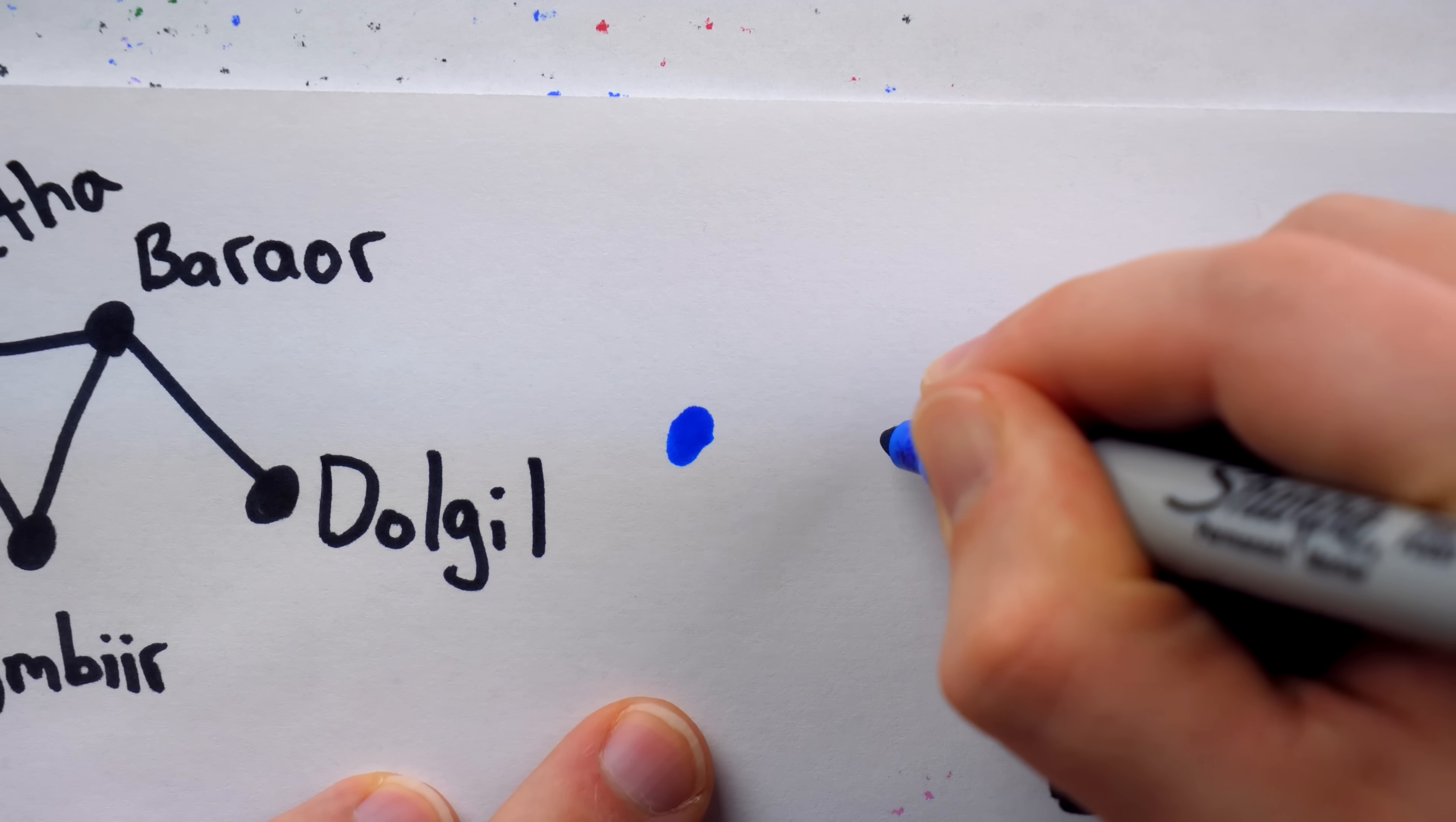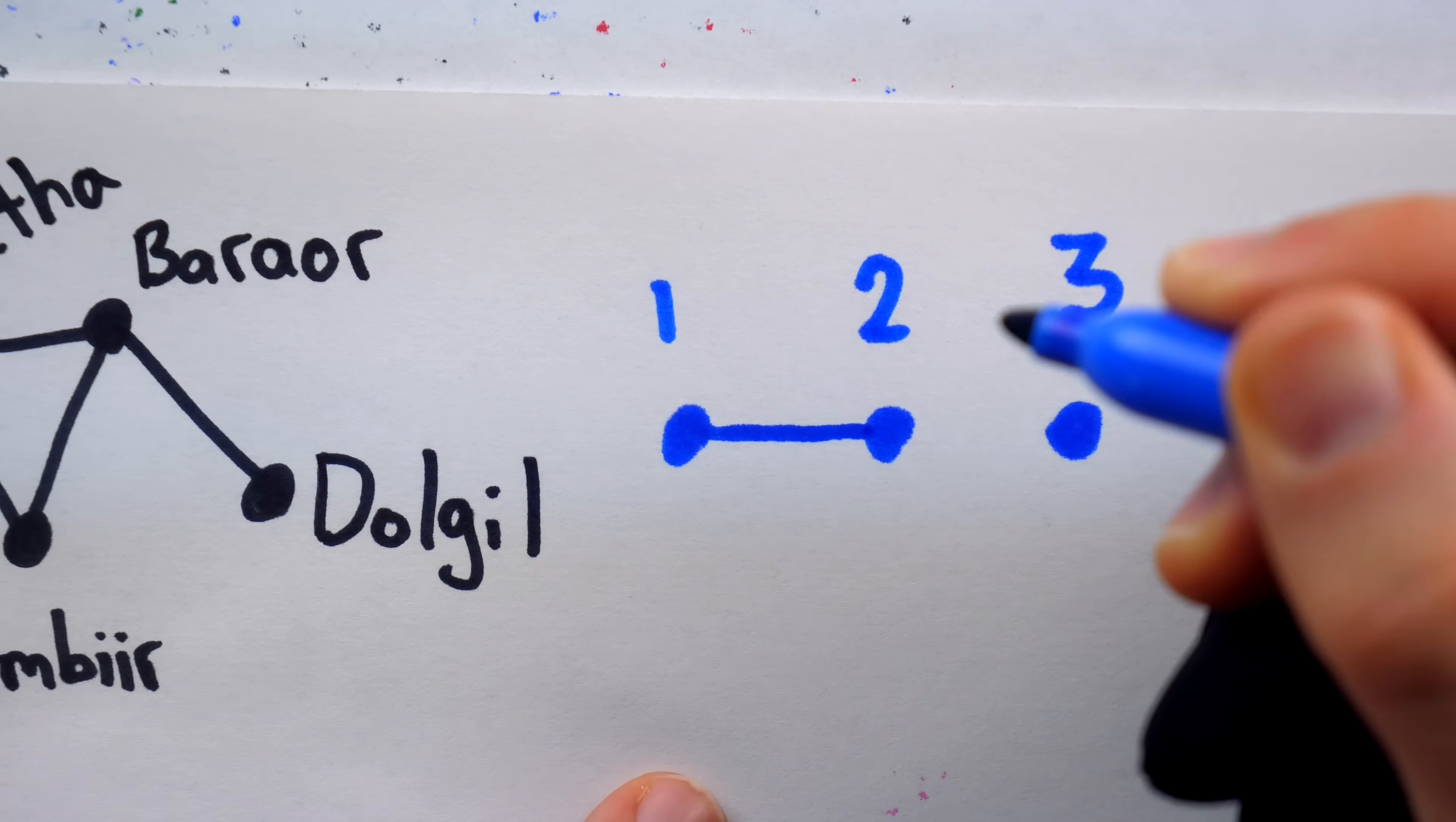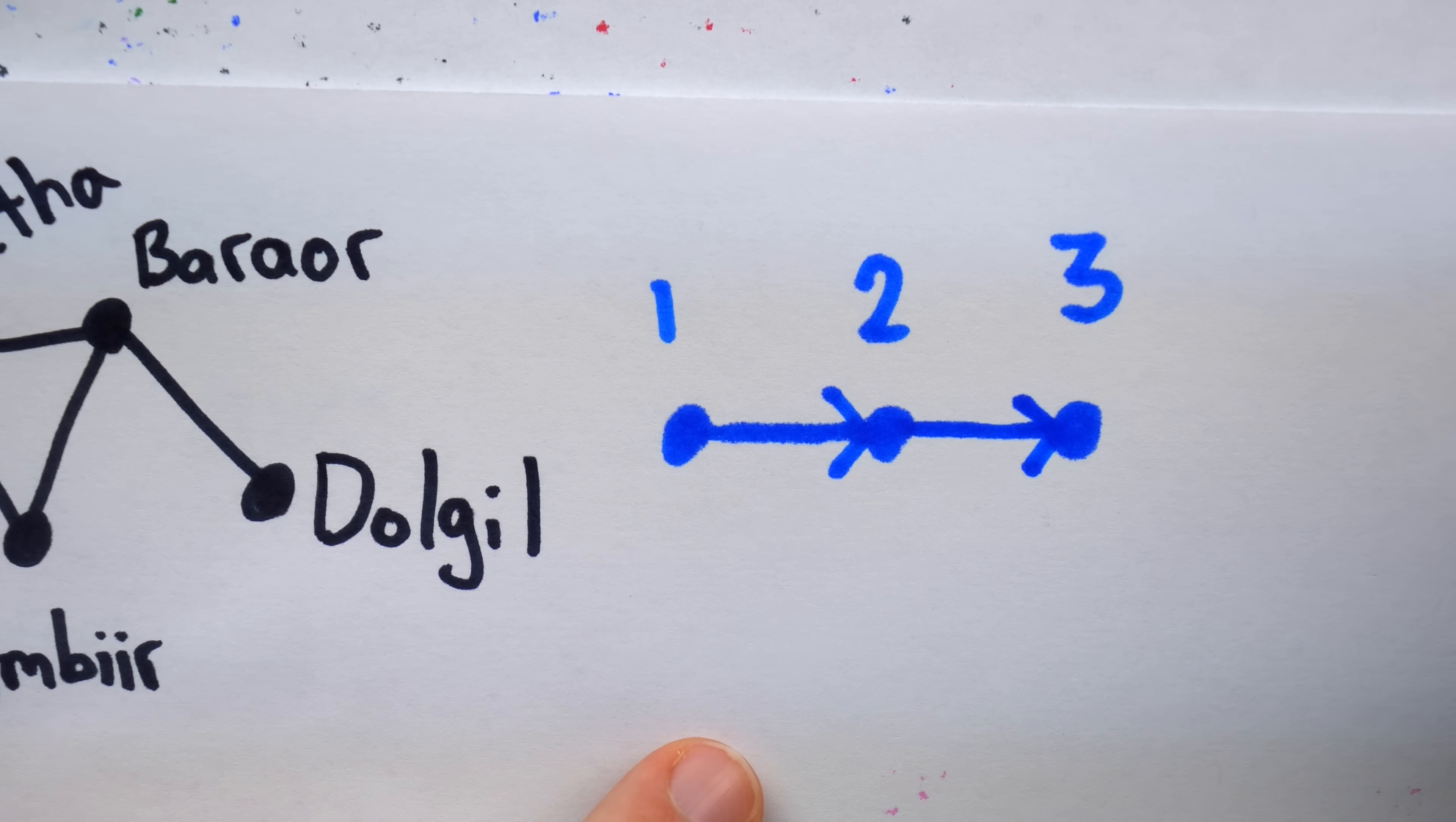But there are also things called directed graphs where the edges have direction to indicate some direction in the relationship that's being described. For example, here's a graph with three vertices, maybe these three vertices represent the numbers 1, 2, and 3, and the relationship I'm considering is less than. 1 is less than 2, but I don't want to represent that just with a plain old edge, because 2 isn't less than 1. The relationship only goes in a single direction, 1 is less than 2, so I could draw an arrow on the edge like that to give it the proper direction. Similarly, 2 is less than 3.